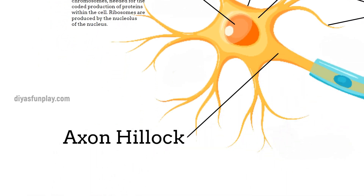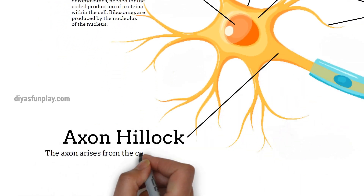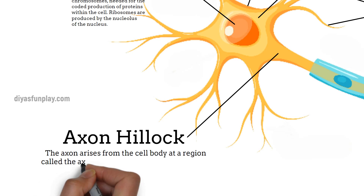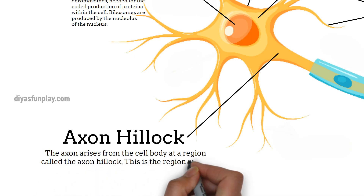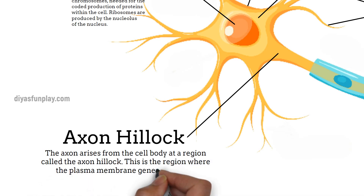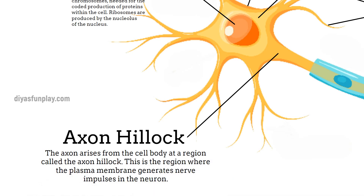Axon. The axon arises from the cell body at a region called the axon hillock. This is the region where the plasma membrane generates nerve impulses in the neuron.